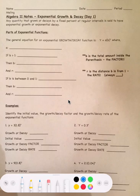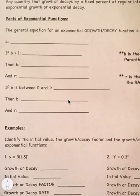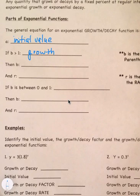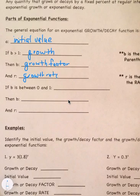Our general equation for exponential growth or decay is y equals a times b to the x power. Here, a is our initial value. If b is greater than 1, we say it is exponential growth, and b is called our growth factor. r is our growth rate, and the growth rate is b minus 1, so the b value minus 1.